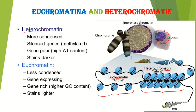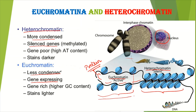Heterochromatins are more condensed and compactly arranged, as you can see in the image. Because they are not very active, these are referred to as silenced genes. On the other hand, euchromatins are less condensed and have high expressing power — they are very active. In the open euchromatin regions, transcription can easily occur and these parts are free to synthesize proteins, making them transcriptionally more active. On staining, euchromatin appears light-colored and heterochromatin appears dark-colored. After staining chromosomes, light bands represent euchromatin and dark bands represent heterochromatin.